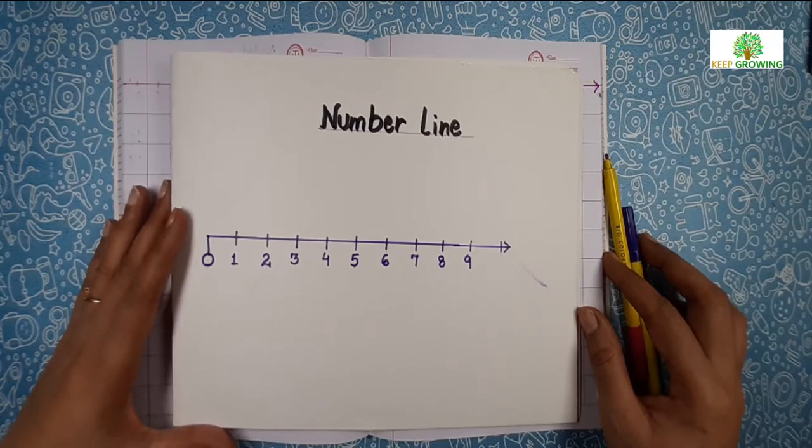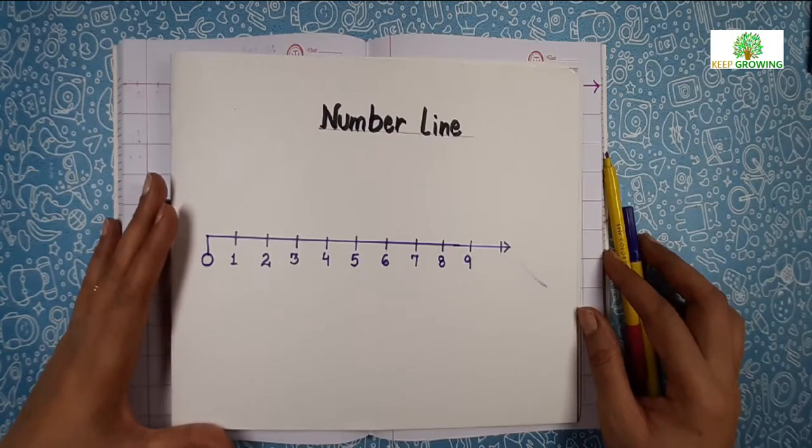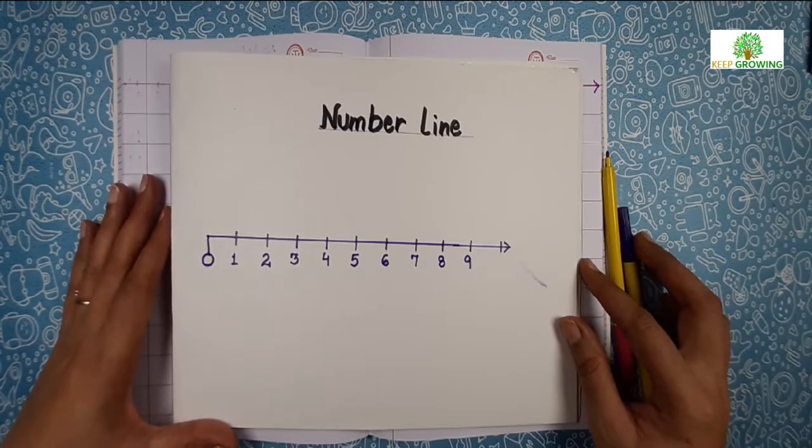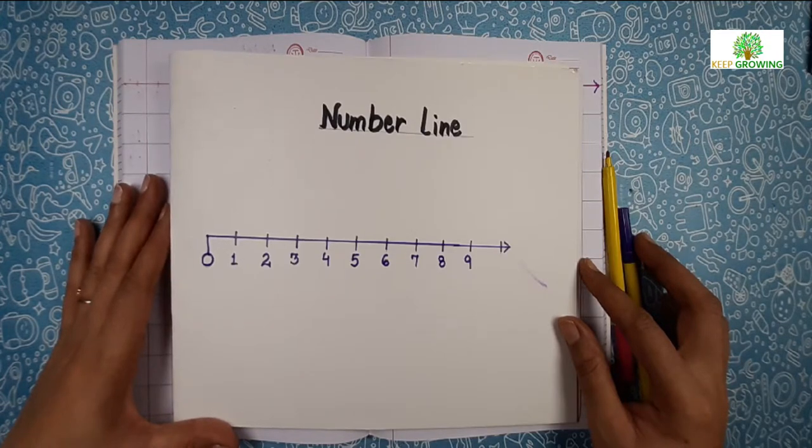Number line, I hope all of you remember this number line. Today, number line plays an important role in early childhood education. We always recommend and advise our teachers to follow the concept of number line because it is very simple and easy method. Children between the age of 3 to 5 can easily understand many concepts through it.